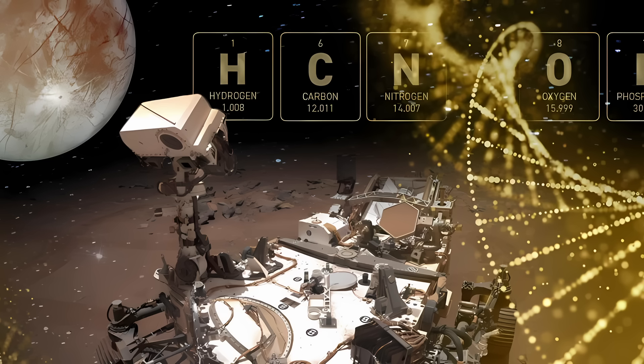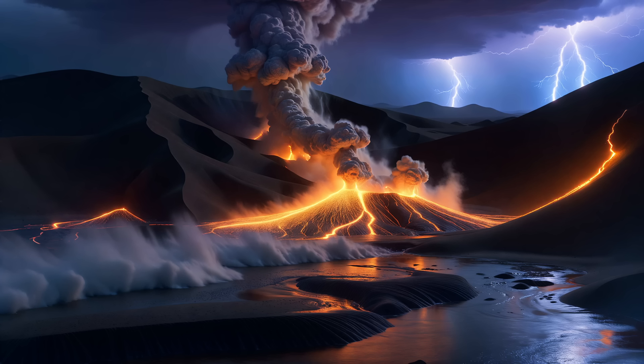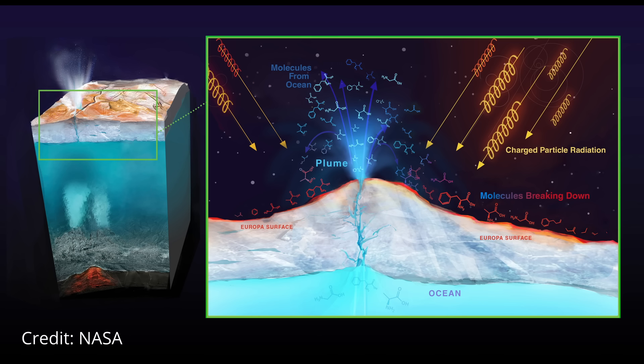Stanley Miller's work had a profound impact on the field of astrobiology and the study of the origin of life. It sparked further research into prebiotic chemistry and the conditions necessary for life to emerge on Earth and potentially on other planets and moons in the universe.